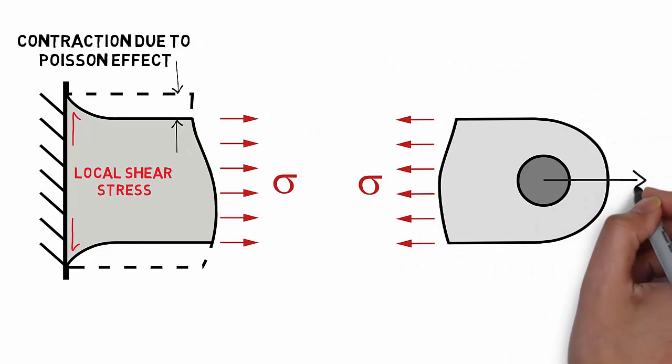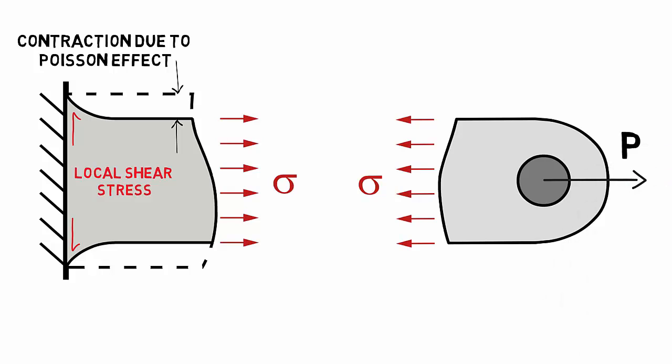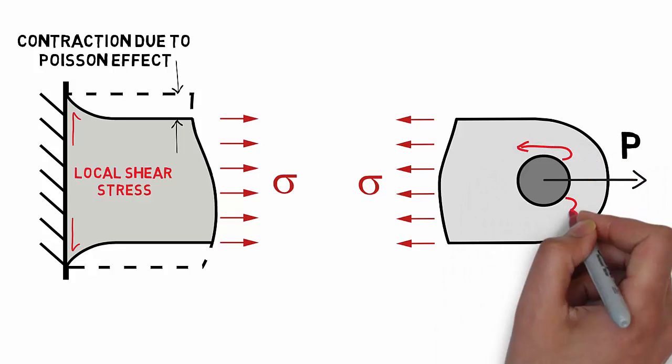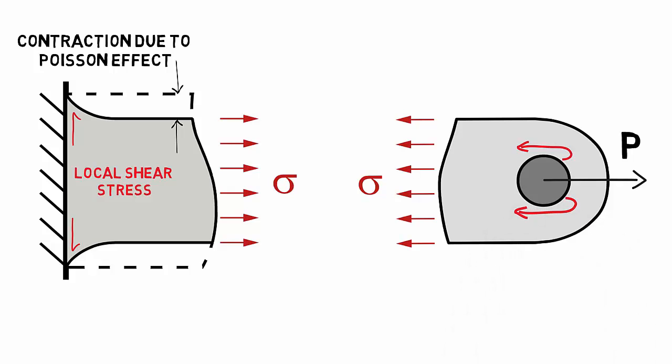Similarly, for the pin connection end of the rod, load introduction occurs through the pin, thus stresses in the rod are initially concentrated around that pin, and have to flow around the pin hole before they can redistribute into a more uniform stress state further along the rod.